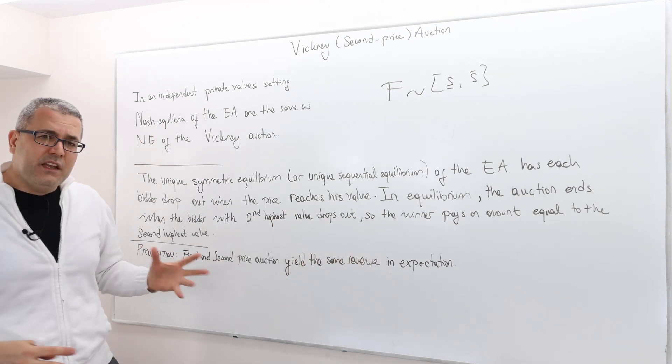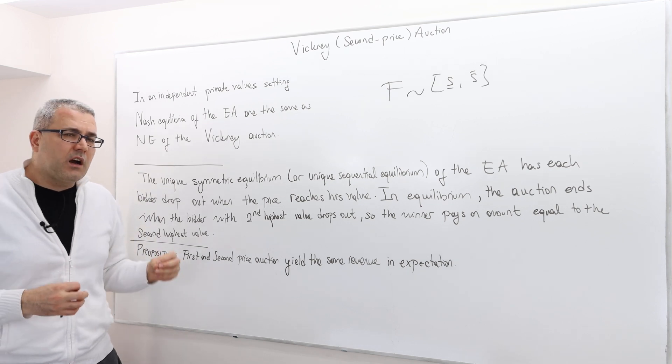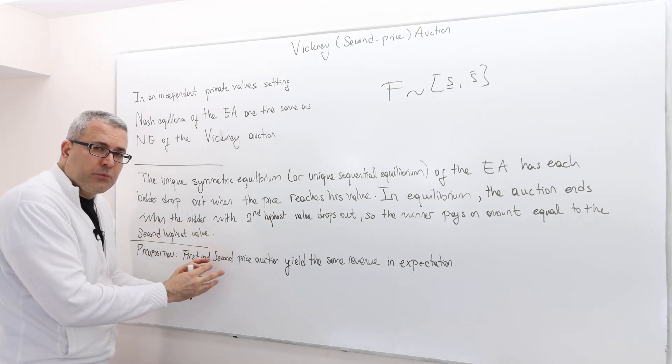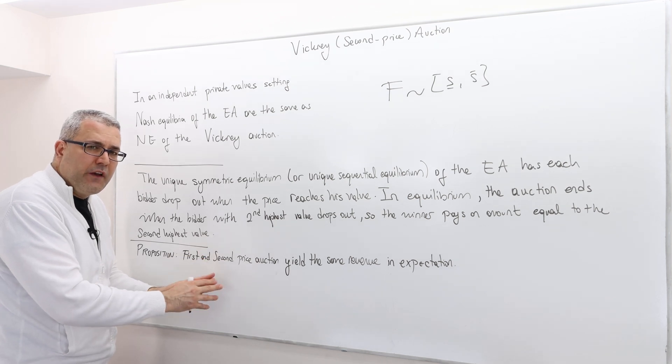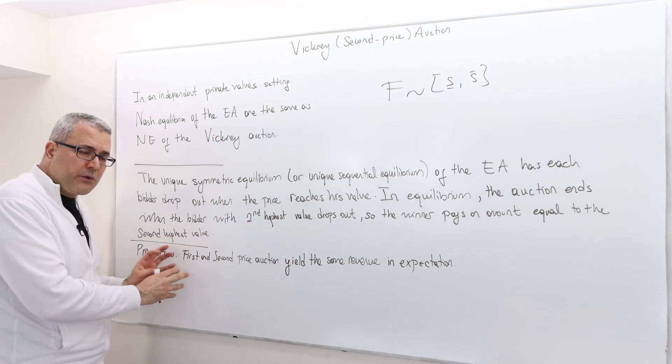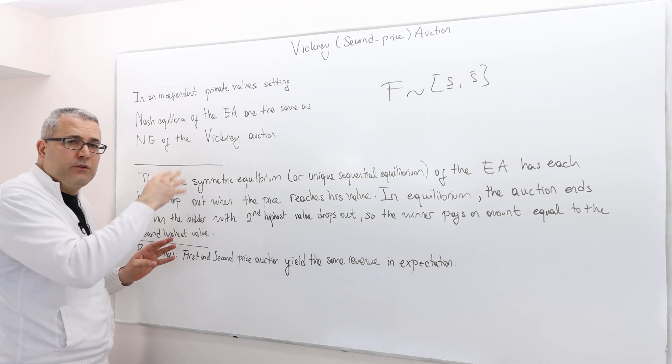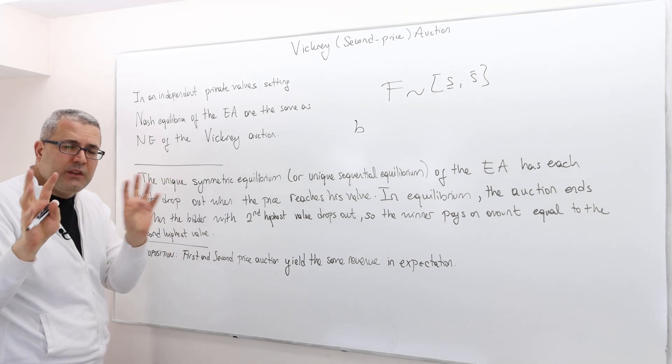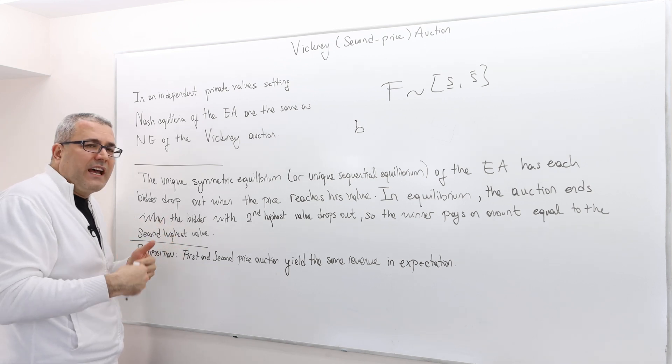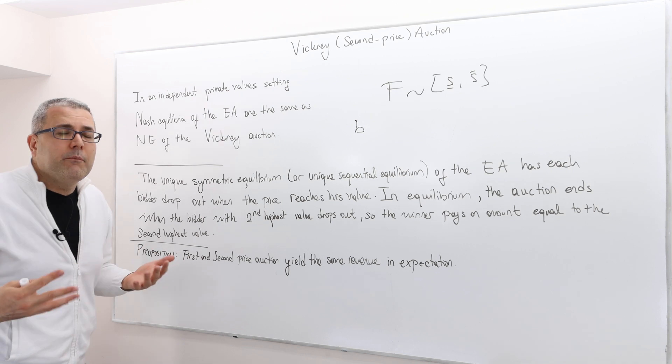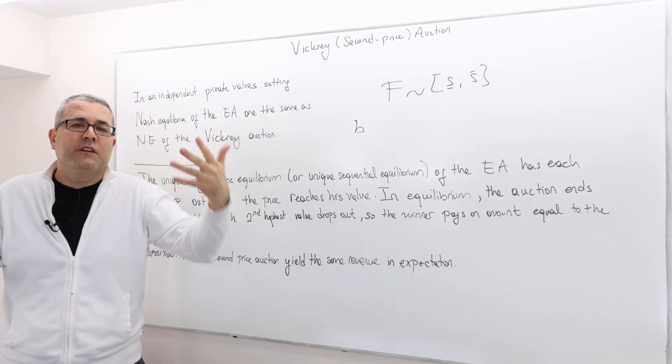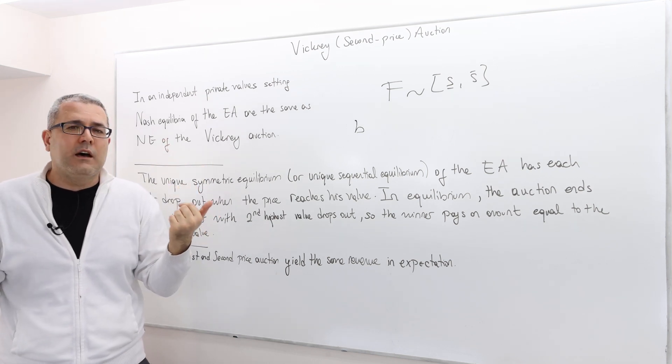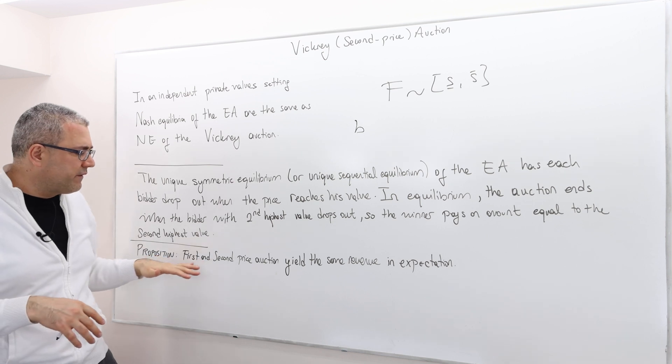That means a particular equilibrium of second price auction where everybody bids his true value and the particular equilibrium in the first price auction where everybody bids according to the bidding function B, which we characterized in the previous episode. If those are the equilibrium in those two different games, then the seller's revenue in expected terms will be the same. But obviously, if the players are playing different equilibria, then these two mechanisms, these two auctions can lead to different expected revenues.